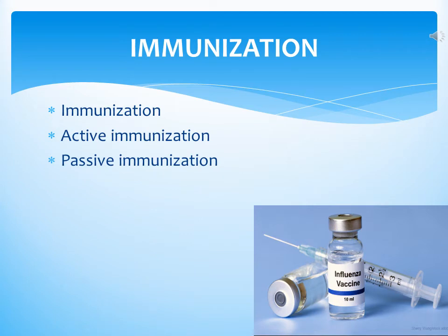Immunization is the process of eliciting a long-lived state of protection against a disease-causing pathogen. Exposure to the live pathogen followed by recovery is one major route of immunization. Immunization can be done in two ways: passive immunization and active immunization. In passive immunization, preformed antibodies are transferred to a recipient — this occurs naturally when maternal IgG is transferred across the placenta to the developing fetus.